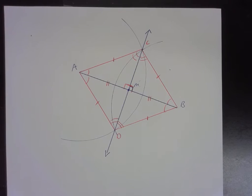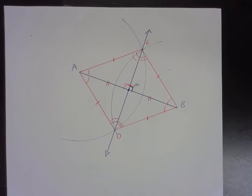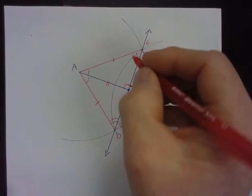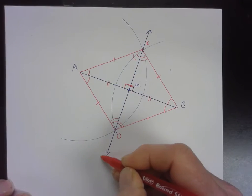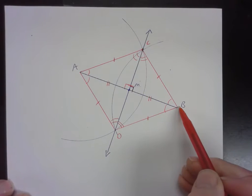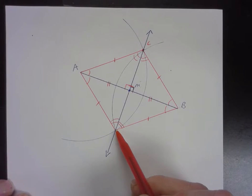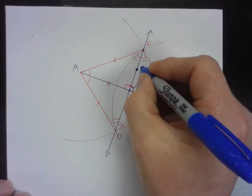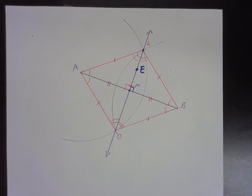Whenever we do a construction, that's what's going on — we're forming congruent triangles and using their corresponding parts. So let's look at Theorem 6.1 on page 302: in a plane, if a point lies on the perpendicular bisector of a segment, then it is equidistant from the endpoints of the segment. See point C right here — it's on the perpendicular bisector. Is it equidistant from A and B? How about point D? How about point E — are you sure?